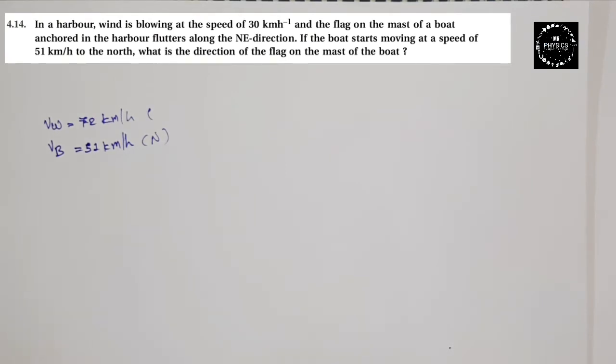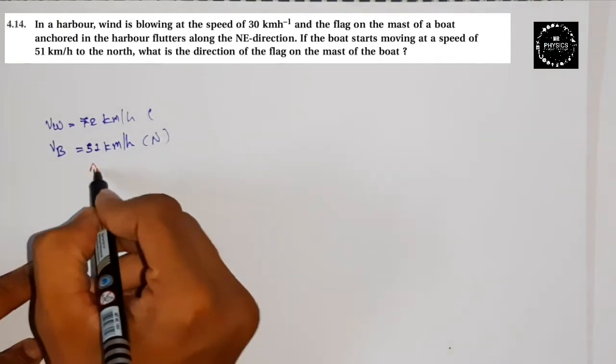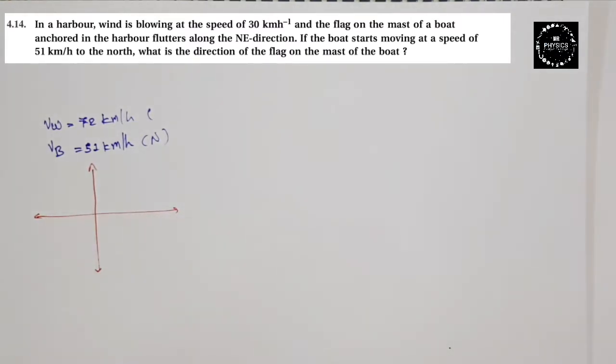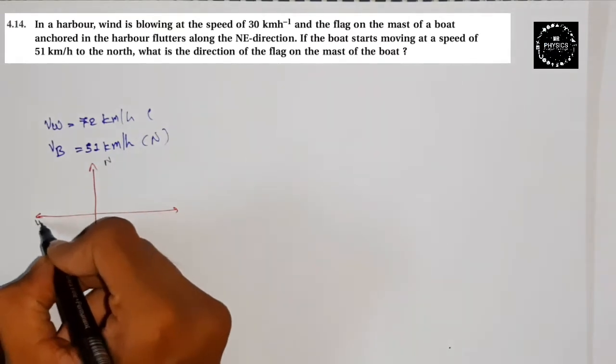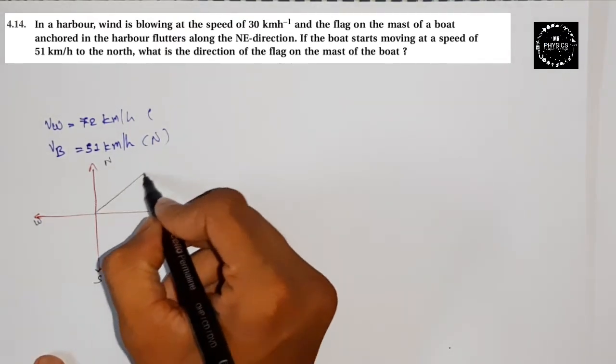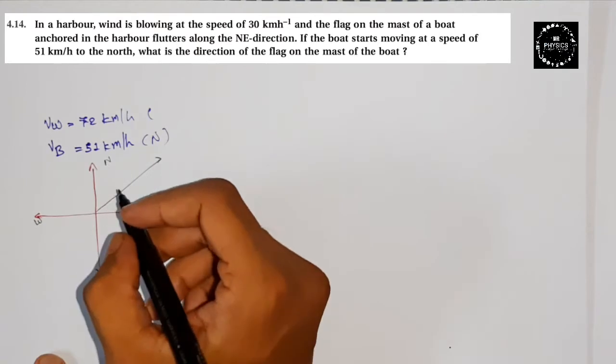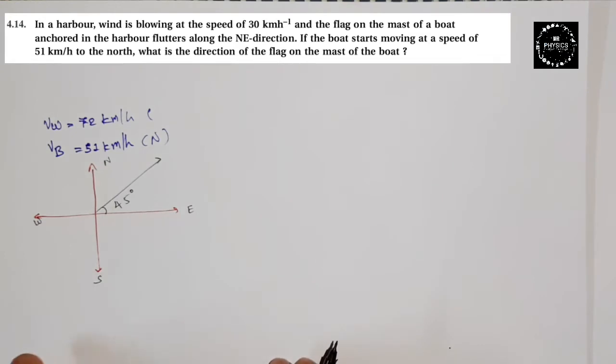So first, let's understand the directions. First of all, this is one of the important things for us. For example, if I am drawing here, we just need to understand first of all this is one of the directions, north, south, west, and east. Now, northeast direction is mentioned. The flag flutters in the northeast direction, which is between these two, so I will consider 45 degrees.